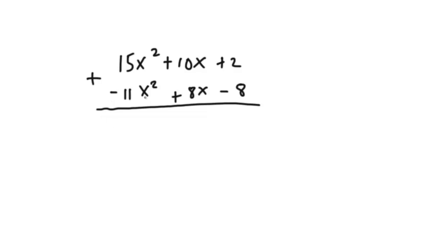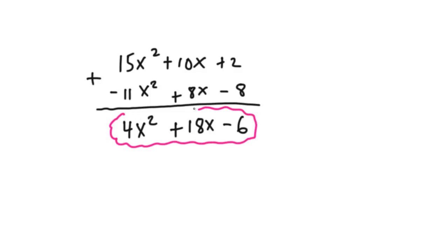We have 15x squared plus a negative 11x squared, so that gives you 4x squared. Then we have 10x plus 8x, that gives you 18x. And plus 2 plus a negative 8 gives us negative 6. So the final answer is 4x squared plus 18x minus 6. That's an example of adding polynomials.